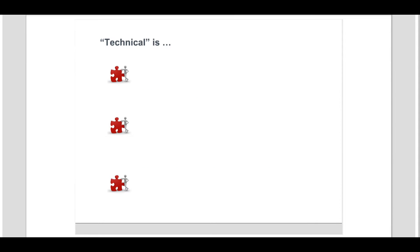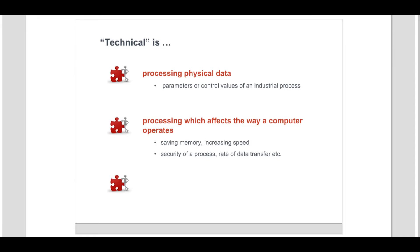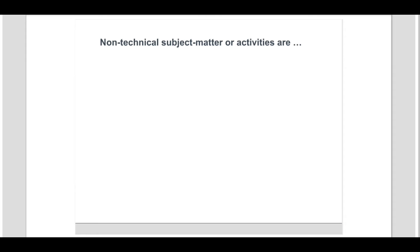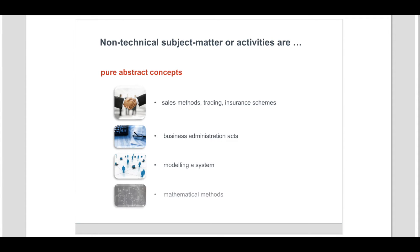Based on Boards of Appeal decisions, here are some examples of what is considered to be technical: processing physical data in a system which affects the control of an industrial process; processing which affects the way in which a computer operates, such as a file compression algorithm; and any physical apparatus such as a computer or any of its components. Subject matter or activities considered to be non-technical are purely abstract concepts such as sales methods, trading, insurance schemes, business administration acts — for example, choosing amongst candidates for a job — modelling a system, or mathematical methods describing the physical effects of an electronic filter.